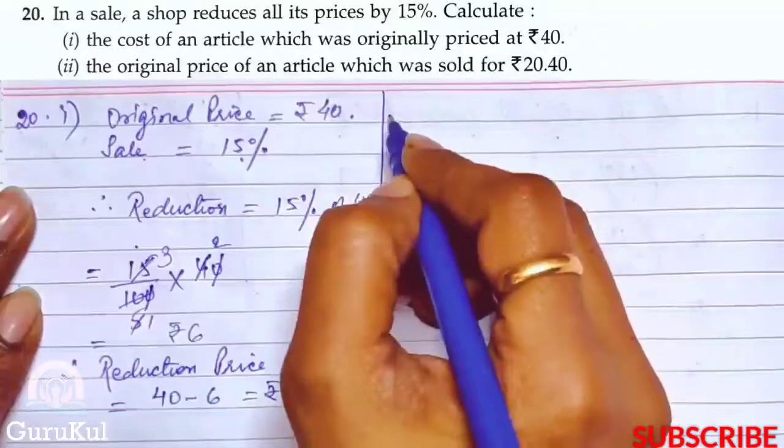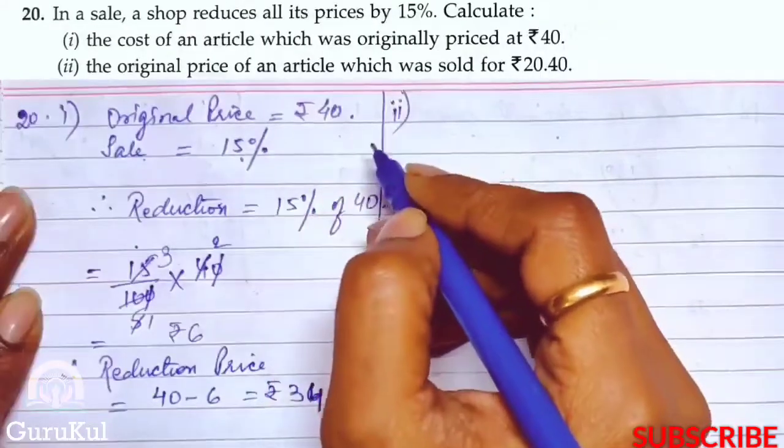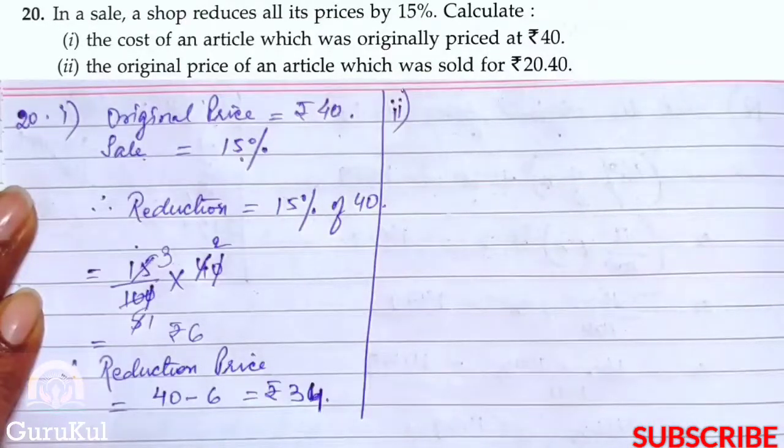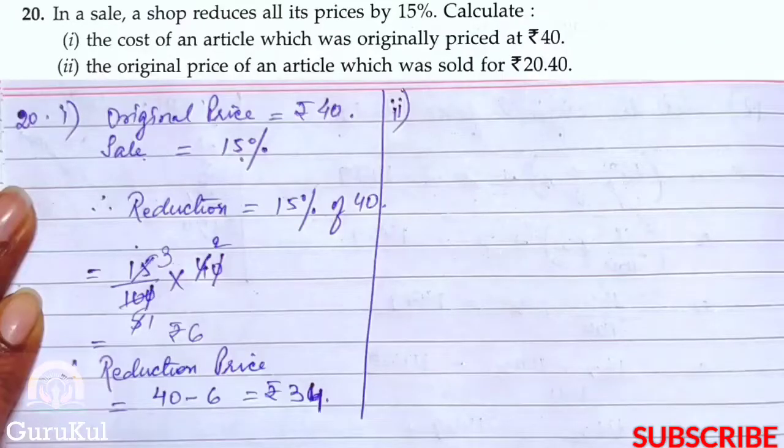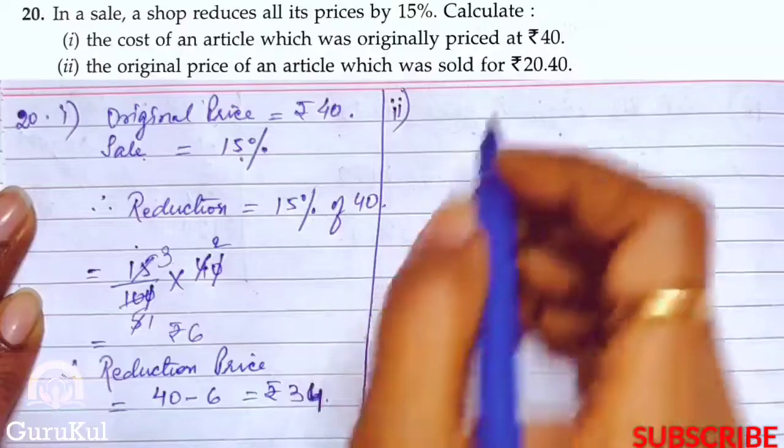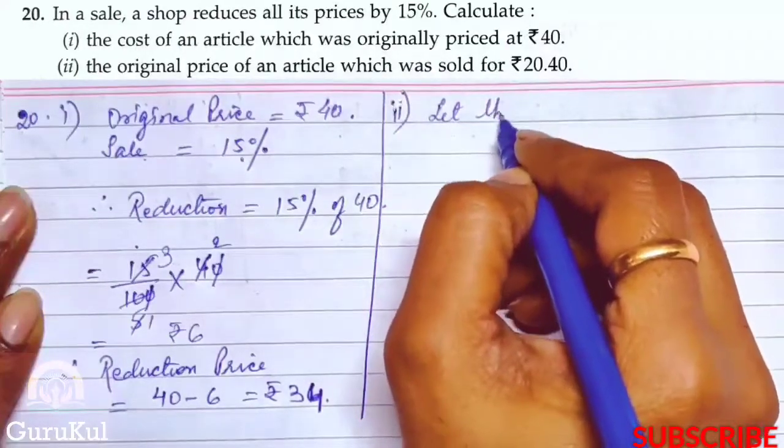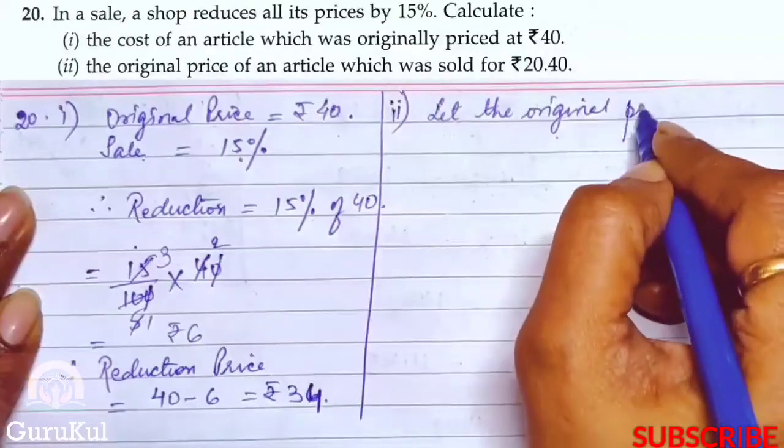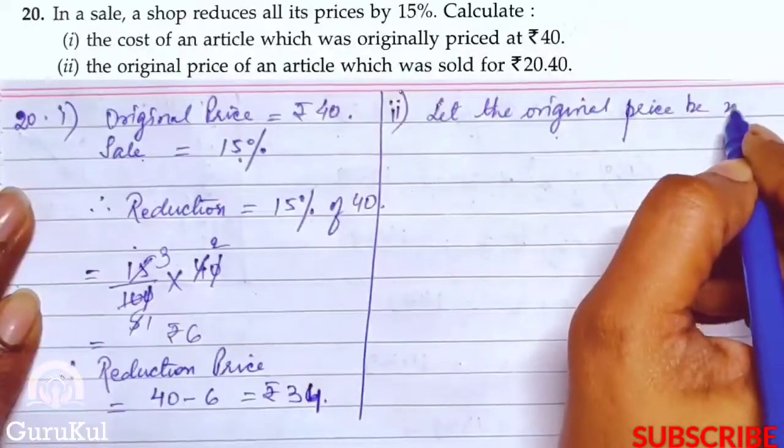Now, we will come to the second part of question number 20, where we have to calculate the original price of the article which was sold for rupees 20.40. So, let the original price be x.